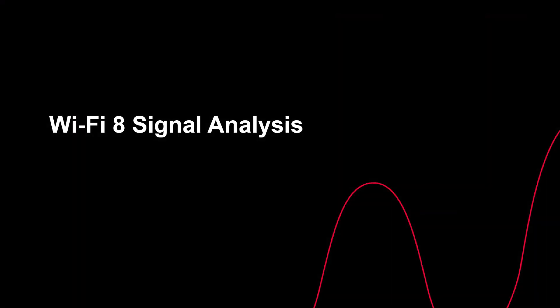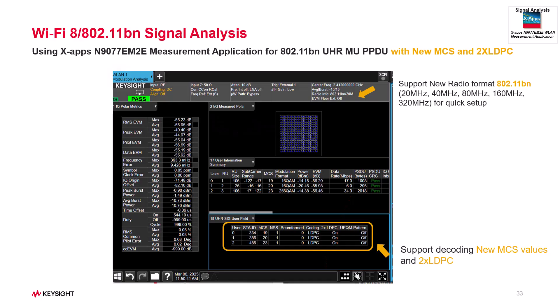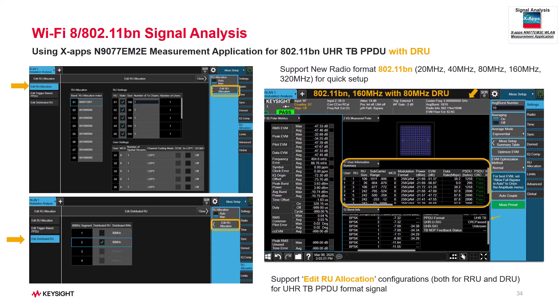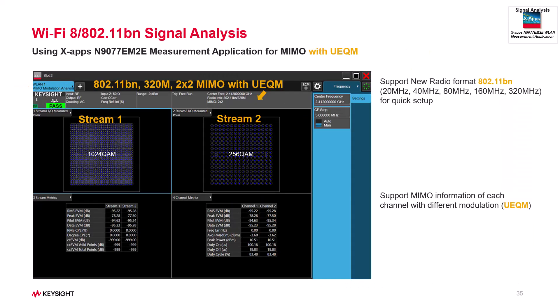For signal demodulation, XApps N9077-EM2E now supports the 802.11BN radio format. It can demodulate UHR-MU PPDU and TB PPDU frames. With UHR-TB PPDU frames, you can edit RU allocation to analyze both regular RU and distributed RU usage. MIMO demodulation is also supported, including UECOM for Wi-Fi 8 signals.